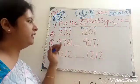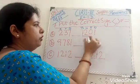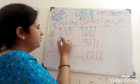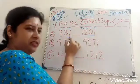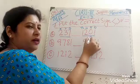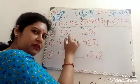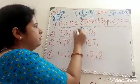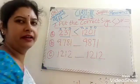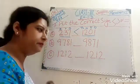You can easily observe that this is a 4-digit number and this one is a 3-digit number. So this one is bigger than this number. So we put greater than sign. Clear?